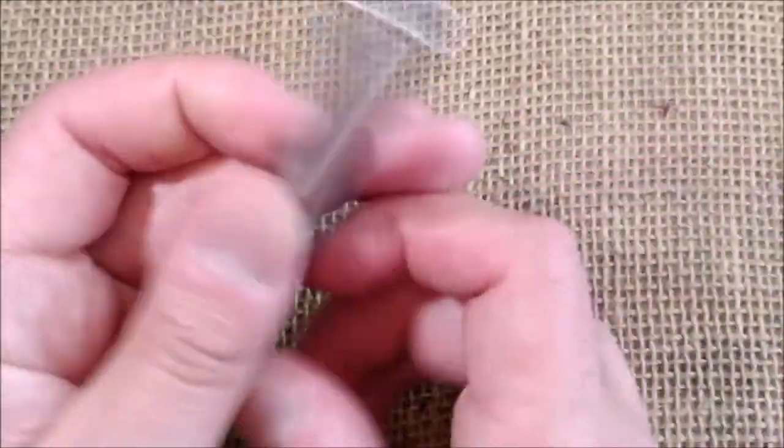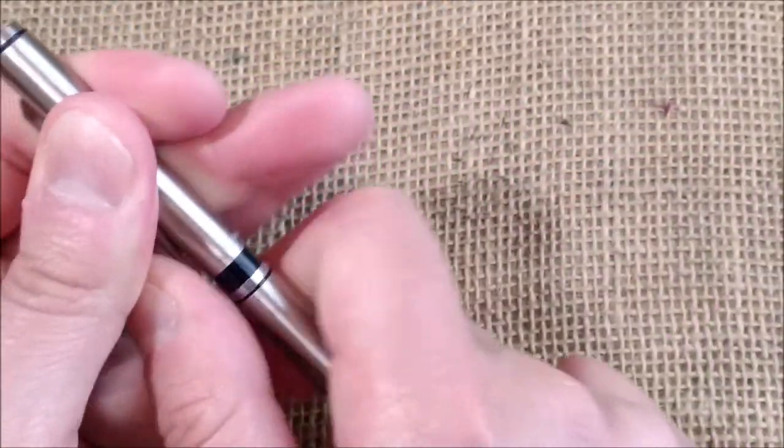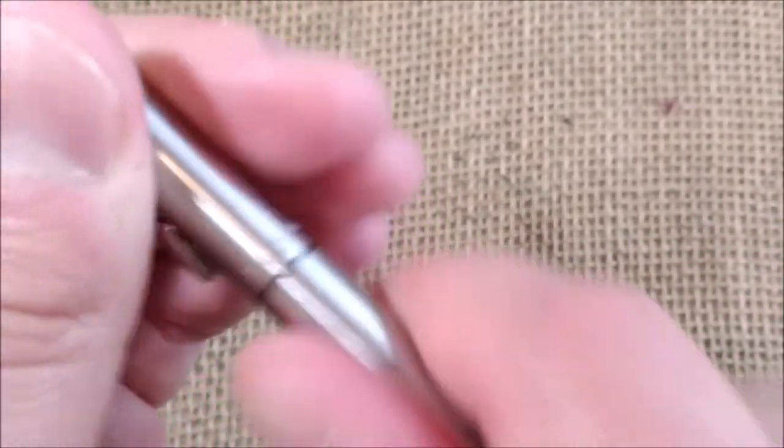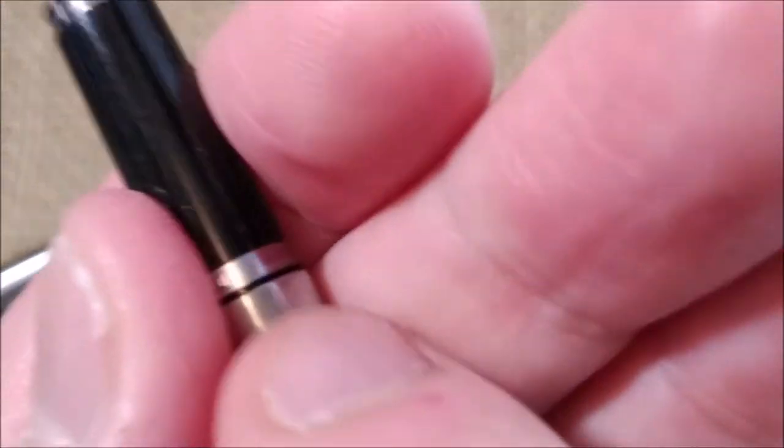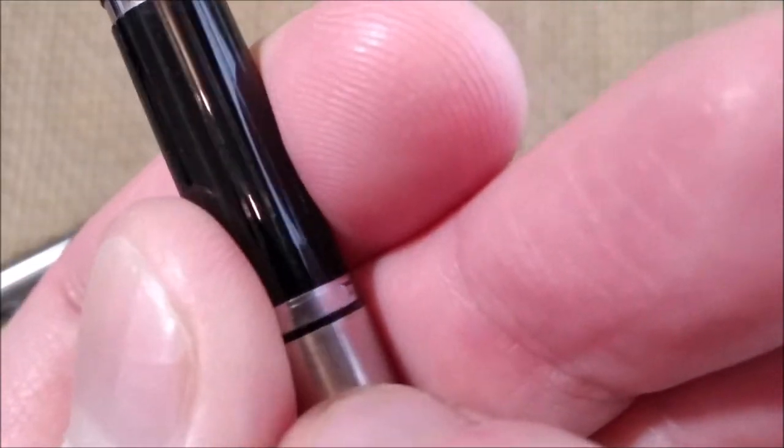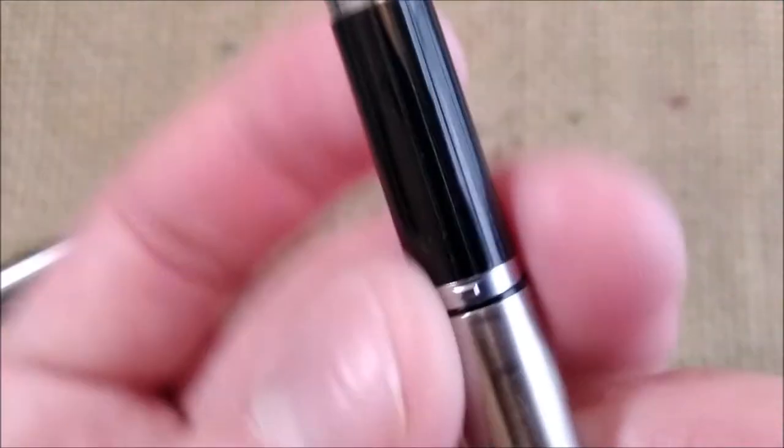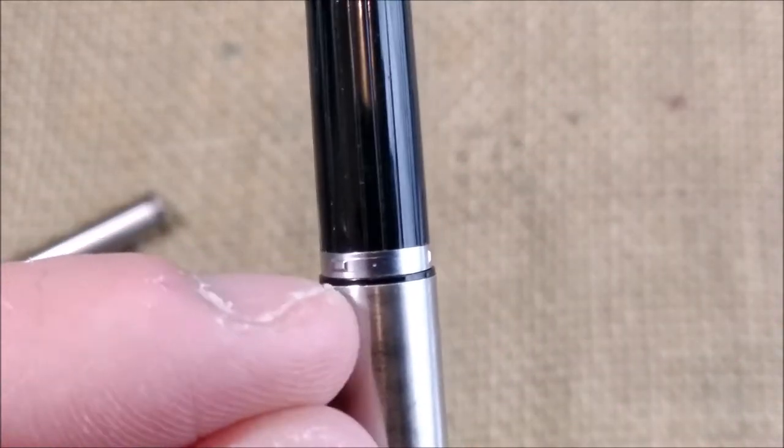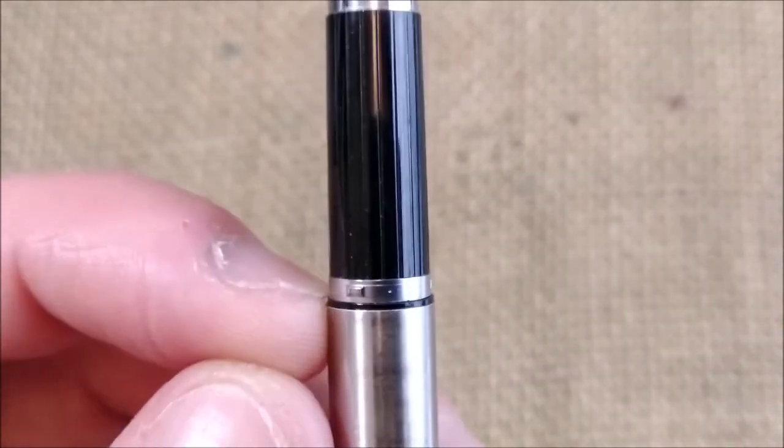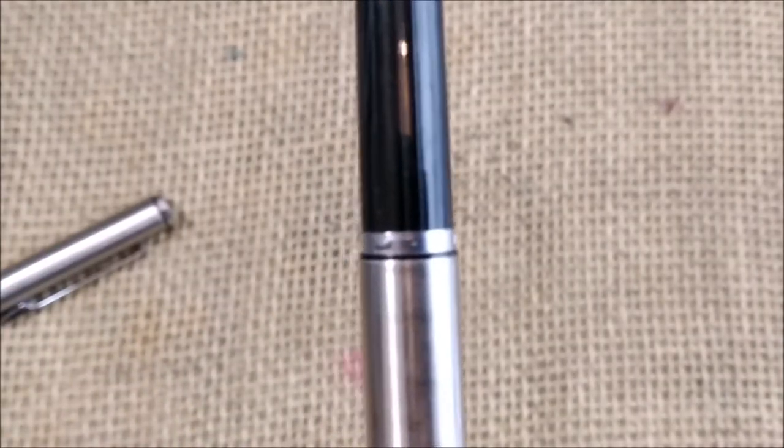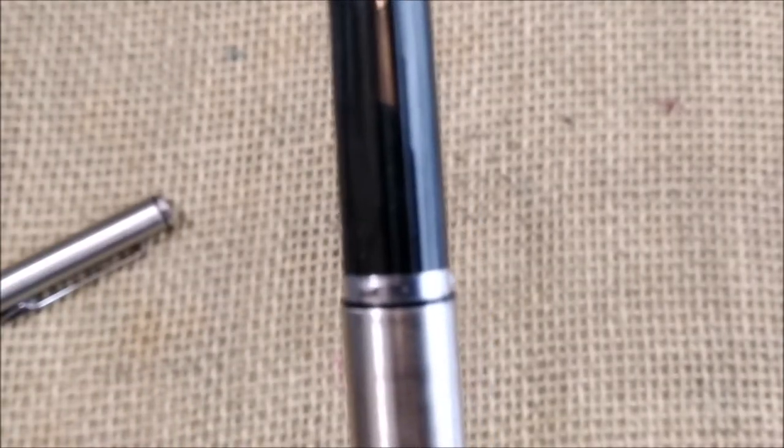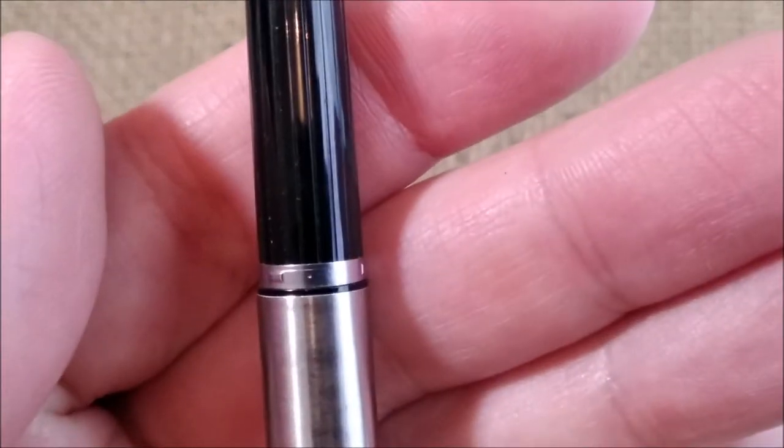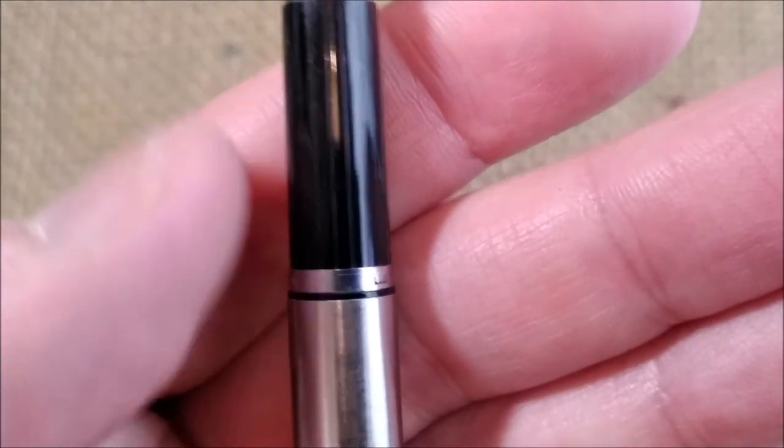The pen uncaps by pulling the cap. This is a cap that clicks in place and is held by those little prongs. When you look at it you see that black ring I showed you which is visible when the pen is capped. Then you have the chrome ring with the little prongs.